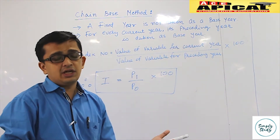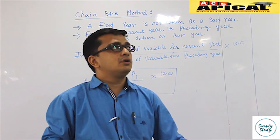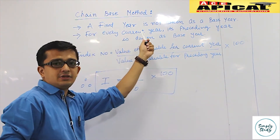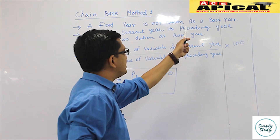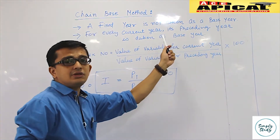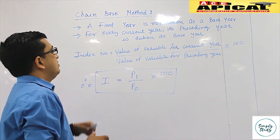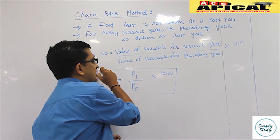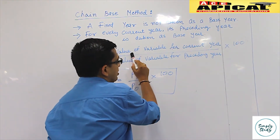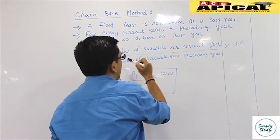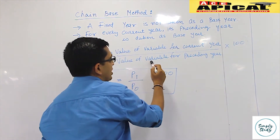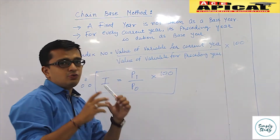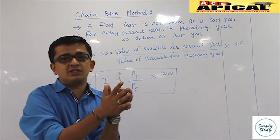The question arises: how is a base year selected here? For every current year, its preceding year becomes the base year. The formula for chain base index number is: index number = (value of variable of current year / value of variable of preceding year) × 100.